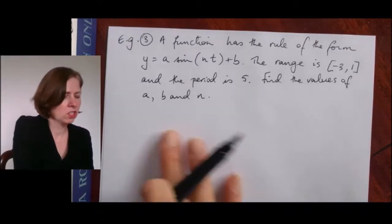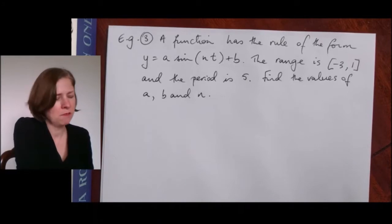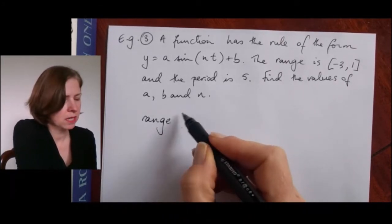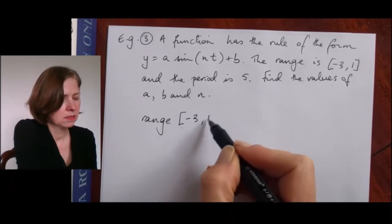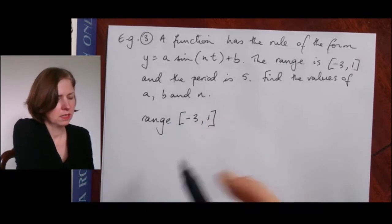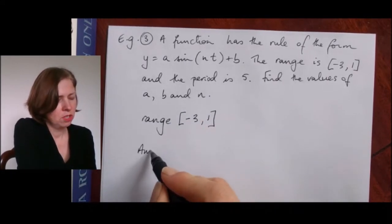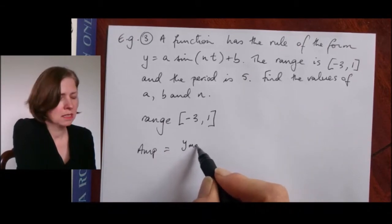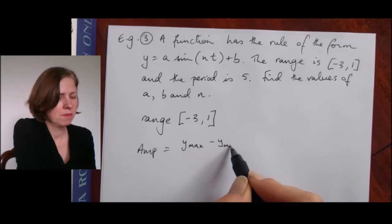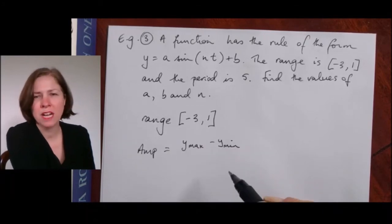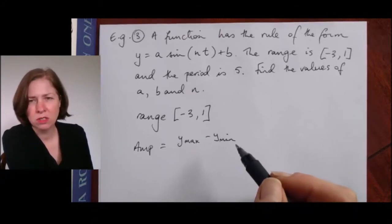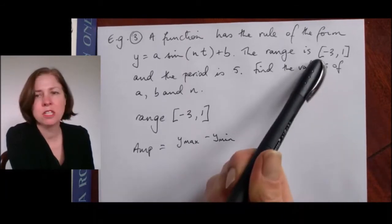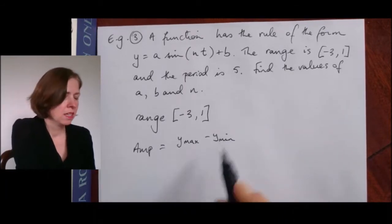Let's start with the first information given: the range is negative three to one. So my amplitude — from the last example — I'm going to use y-max minus y-min, in other words the maximum y value minus the minimum y value, which is given to me in the range, over two.